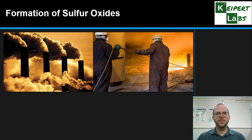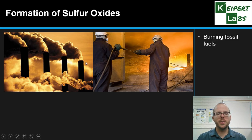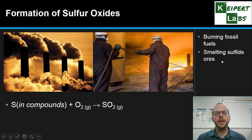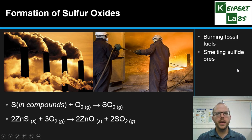Let's begin by thinking about how sulphur oxides are formed. The two main processes are the burning of fossil fuels — like coal in particular, which contains a certain amount of natural sulphur — and also the smelting of sulphide ores for extracting metals like copper and zinc from their natural sulphur minerals dug out of the ground. Sulphur in compounds found in coal, when burned in the presence of oxygen, produces sulphur dioxide, SO2. SO2 is also formed in smelting, for example with zinc — burning in the presence of oxygen gives solid zinc oxide but also produces sulphur dioxide gas, all of which is released into the atmosphere.